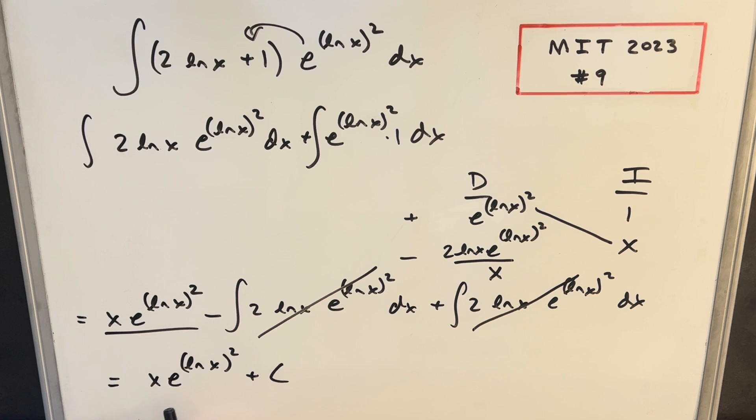So for our final answer, we have x e to ln(x) squared plus c. And we're done.